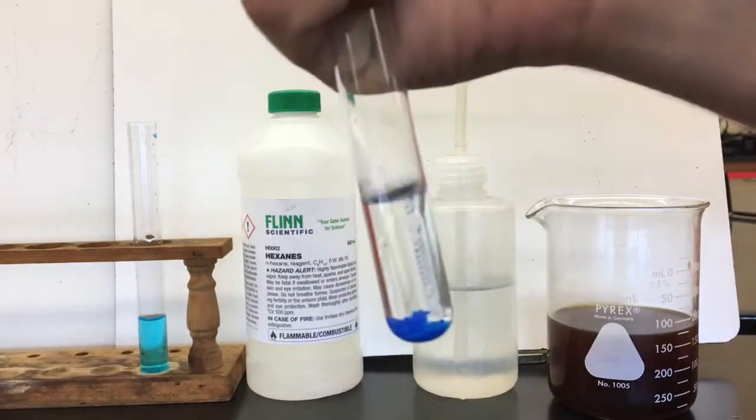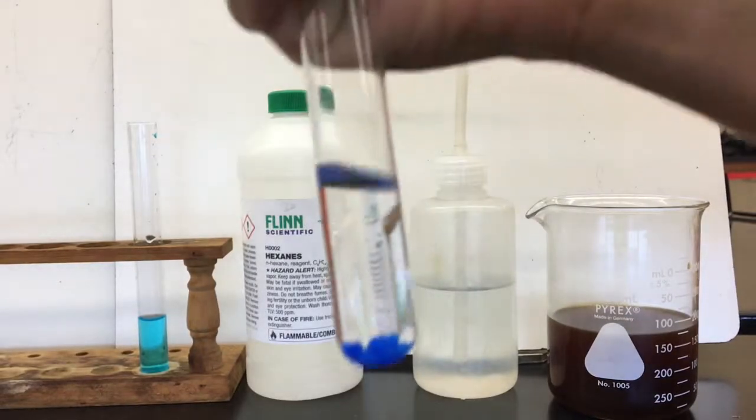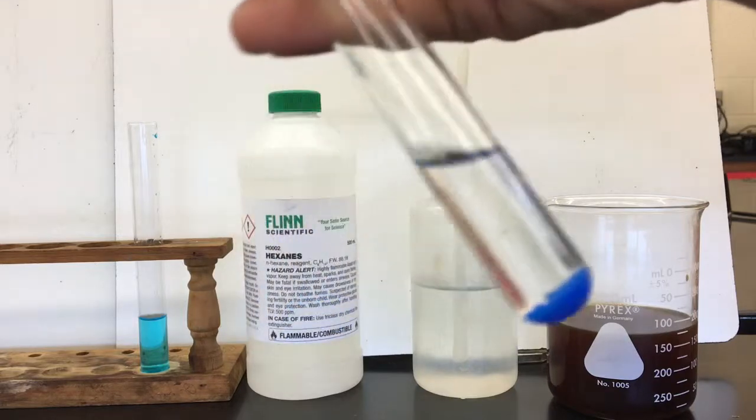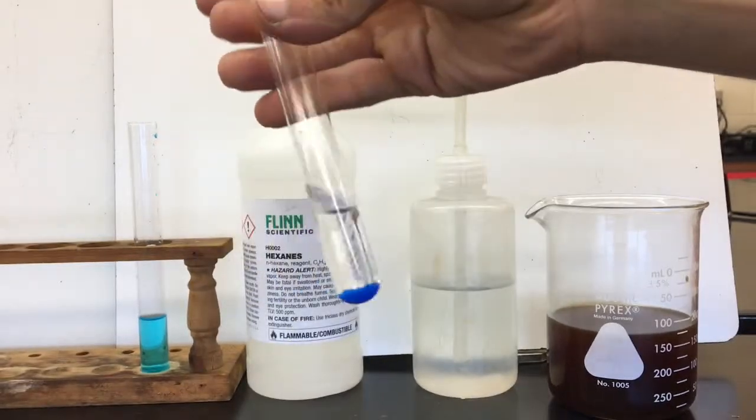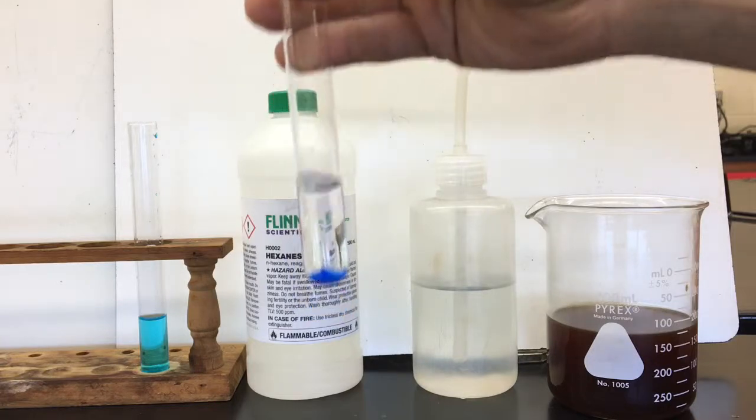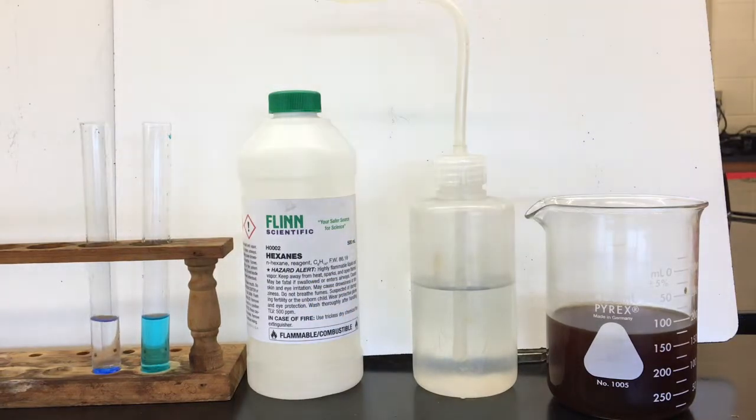Doesn't seem to be dissolving at all. The hexane is not dissolving this copper nitrate. The copper nitrate is just sitting there at the bottom of the test tube. Like a butt face. When I swish it around, it just settles back down. Interesting stuff.